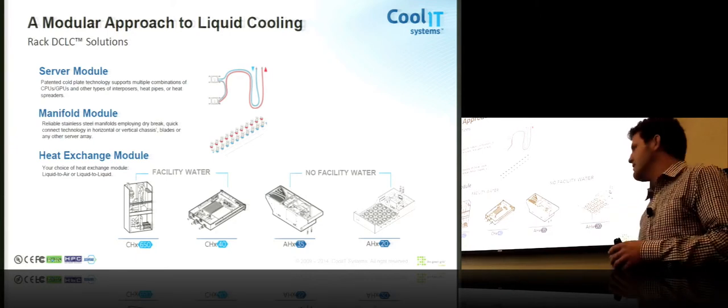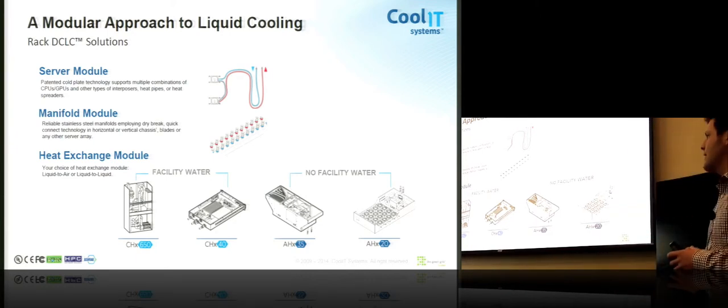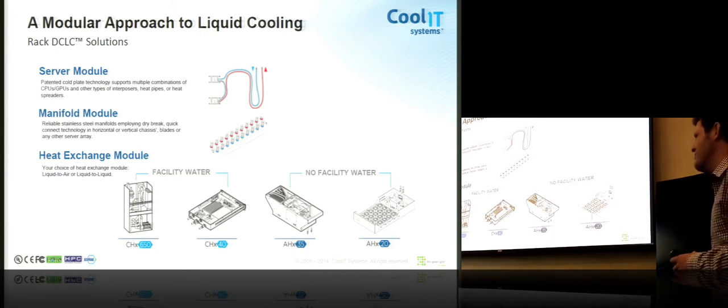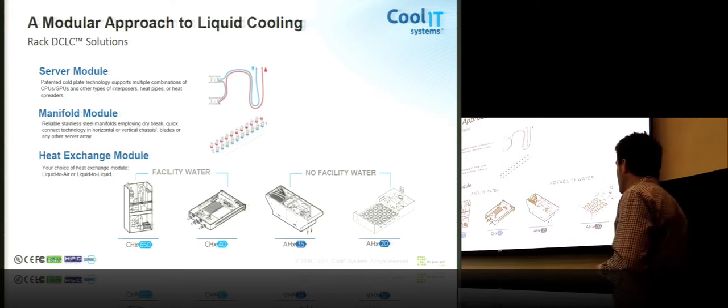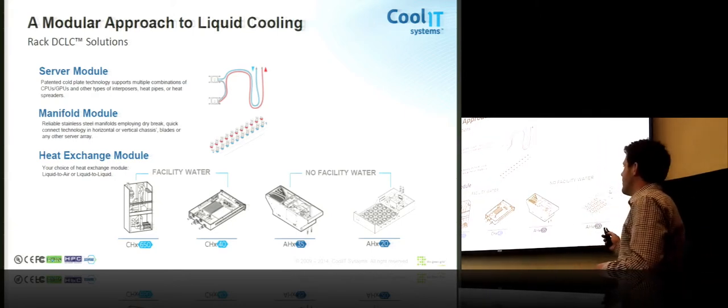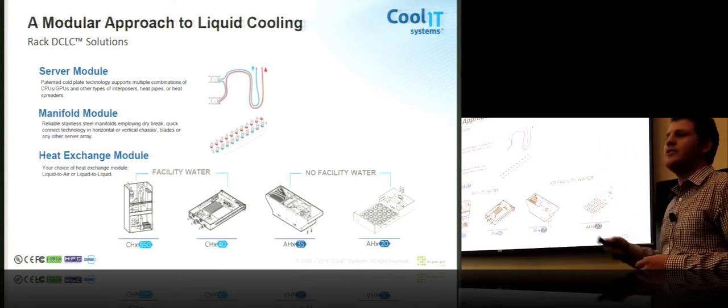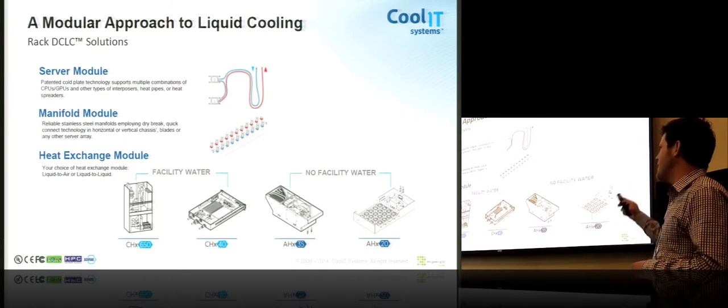The CHX650, on the other hand, is a row-based cooler. So it can handle 650 kilowatts. You can split that up into roughly 600 nodes, and you can put that in as many or as little racks as you'd like. So most of the numbers that I rattle off later are all based on our liquid-to-liquid heat exchanger, not the liquid-to-air.